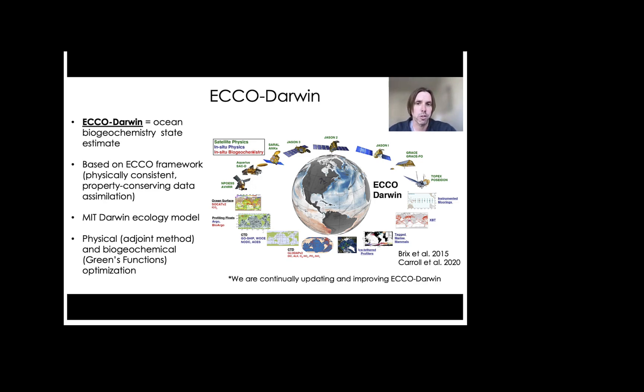ECCO-Darwin also incorporates the MIT Ecology model, which provides biogeochemistry and a realistic ecosystem that has five phytoplankton and two zooplankton functional types. We optimize the physics, so the ocean circulation and tracers of ECCO-Darwin, using the adjoint method. And the biogeochemistry and ecology are optimized using a Green's Functions approach. And I want to stress that we are continually updating the ECCO-Darwin solution to span to near present. So this is an ongoing effort and new output from the model is made available as soon as it is ready.